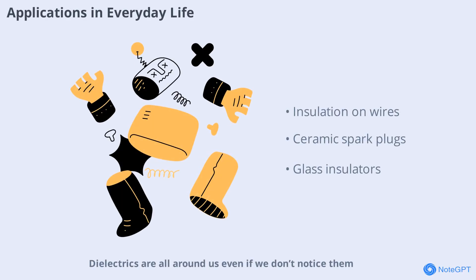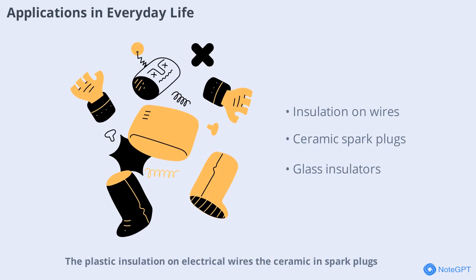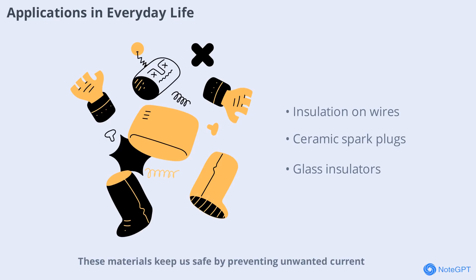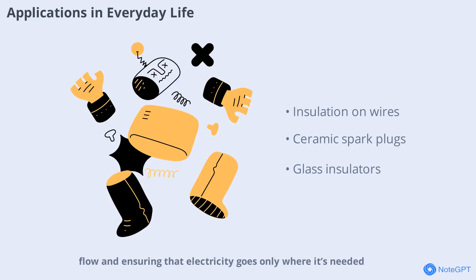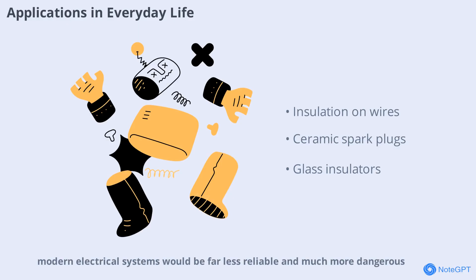Dielectrics are all around us, even if we don't notice them. The plastic insulation on electrical wires, the ceramic in spark plugs, and the glass in high-voltage insulators all rely on dielectric properties. These materials keep us safe by preventing unwanted current flow and ensuring that electricity goes only where it's needed. Without dielectrics, modern electrical systems would be far less reliable and much more dangerous.